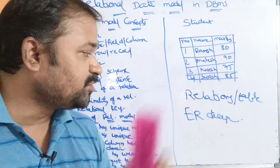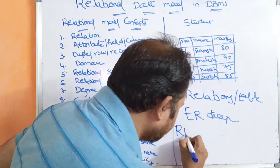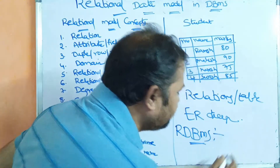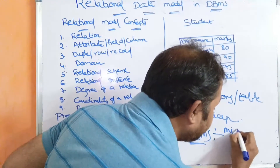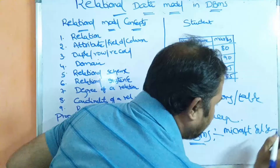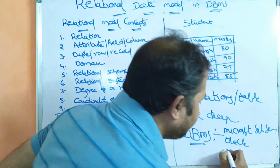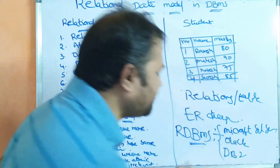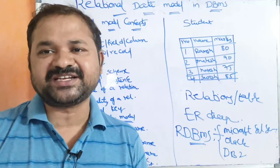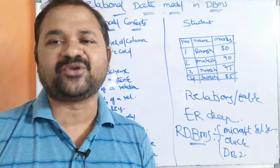In order to implement those relations, we use RDBMS and SQL. So mainly we use Microsoft SQL Server, Oracle, and DB2. These three technologies are used in order to implement relations practically with the help of SQL.